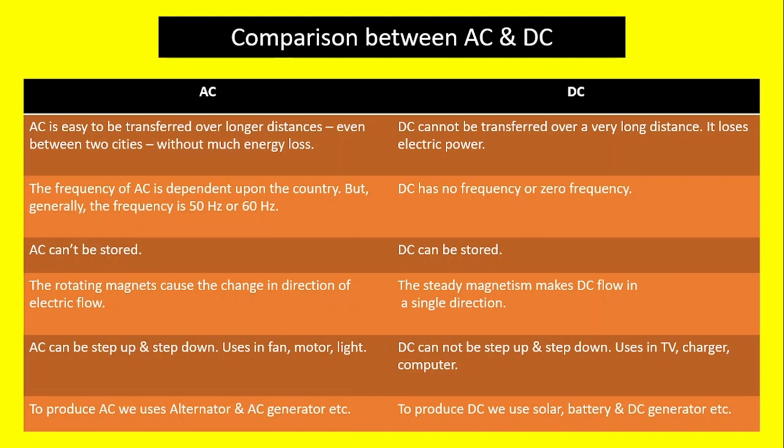DC cannot be transferred over a very long distance — it loses electrical power. The frequency of AC is dependent upon the country, but generally the frequency is 50 Hertz or 60 Hertz.